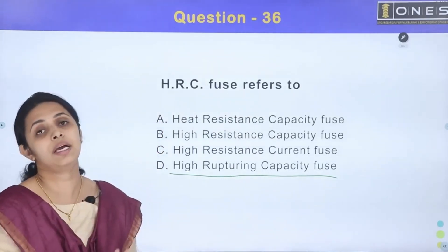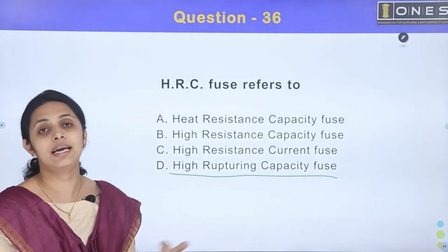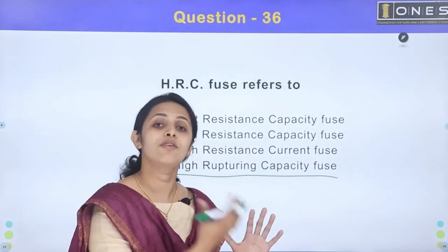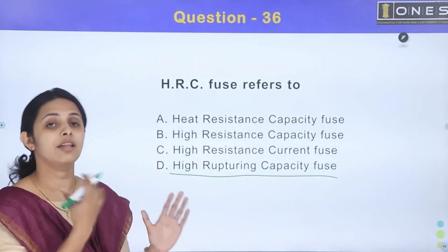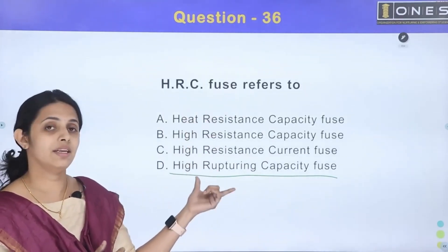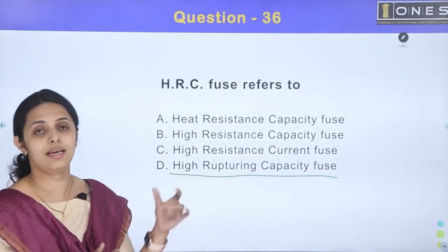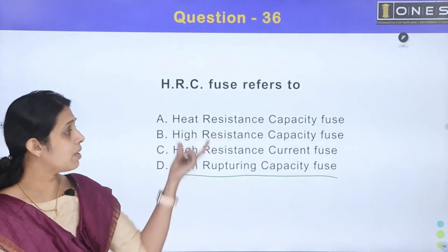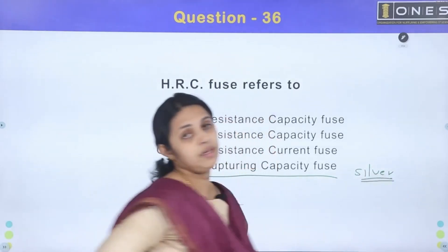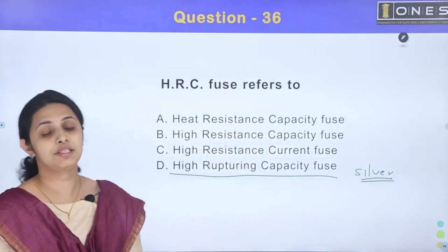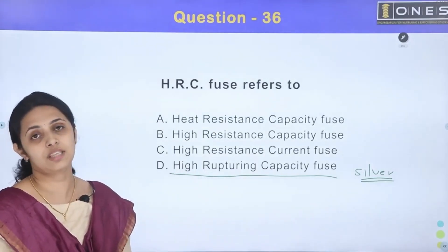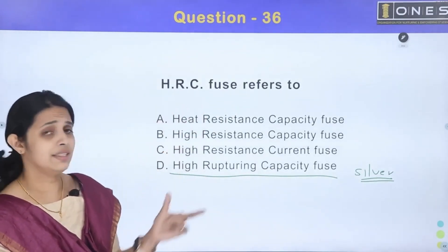The HRC Fuse can withstand fault current; if the fault current is not high enough, the fuse will not melt. We use a metal element inside the HRC Fuse — specifically a silver fusing element. With high current passing, the silver will burn and melt, protecting the circuit.